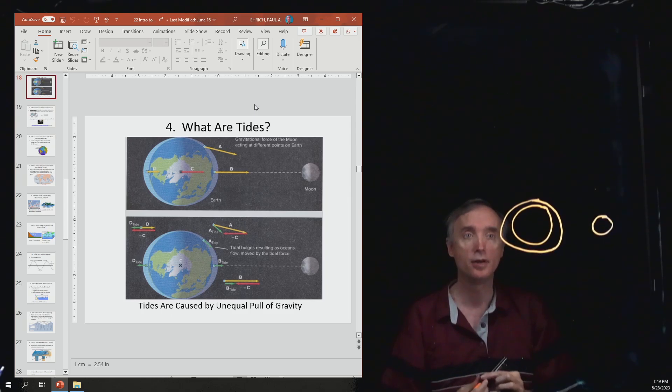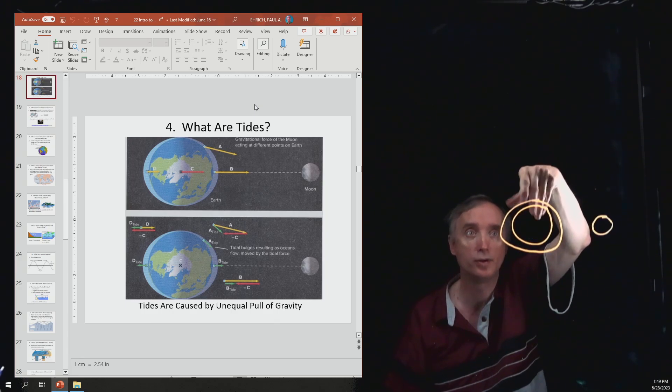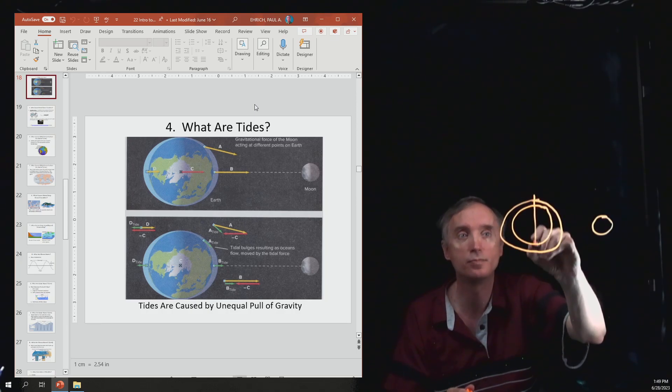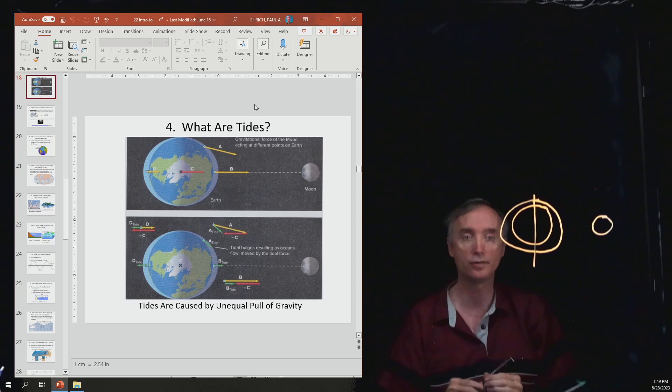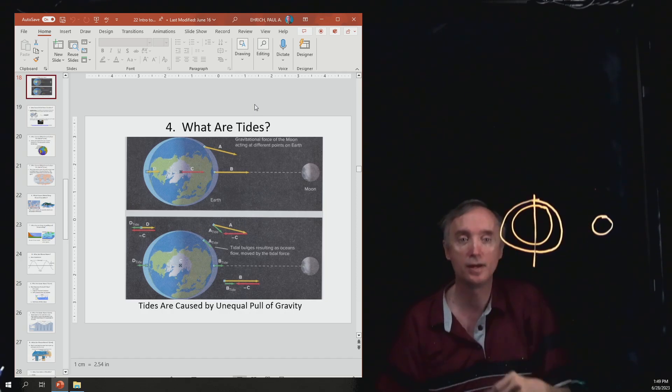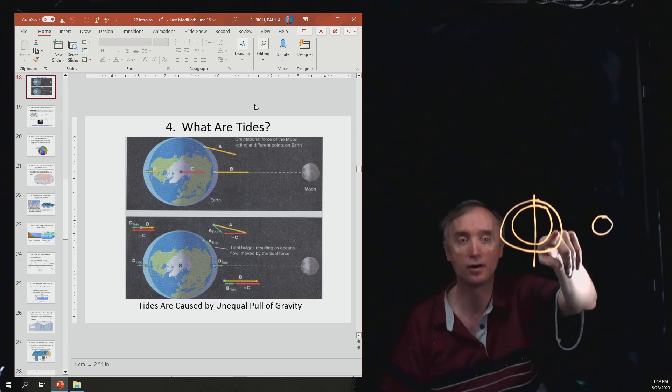And then because the earth is rotating, so the earth would be rotating like this. So this would be the spin axis of the earth. Because the earth is rotating, it makes it seem like these bulges are traveling around the earth.